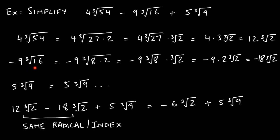For negative 9 times cube root of 16: 16 equals 8 times 2, and 8 is a perfect cube. Splitting: cube root of 8 is 2, and negative 9 times 2 is negative 18, so this simplifies to negative 18 cube root of 2. For 5 times cube root of 9: the largest perfect cube less than 9 is 8, but 8 is not a factor of 9. So 5 cube root of 9 stays as it is — we cannot always simplify, so don't force it.